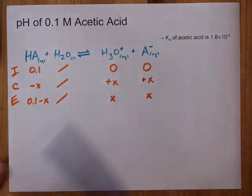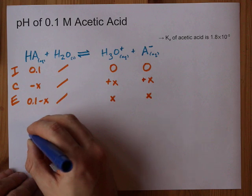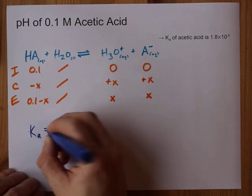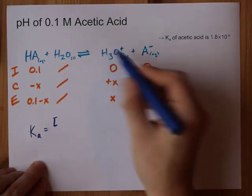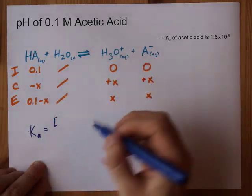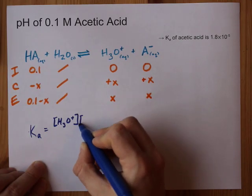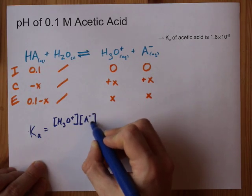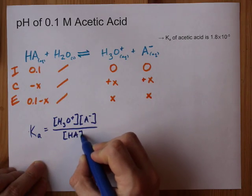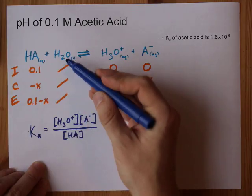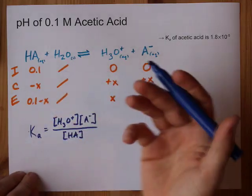The Ka is similar to Keq if you've been taught that. Ka is products over reactants to the power of their coefficients, but these are all 1s, so we have the H3O+ concentration times the acetate ion concentration divided by the HA concentration. Water gets ignored again because it's a liquid — well, not pure, but it's a liquid here.